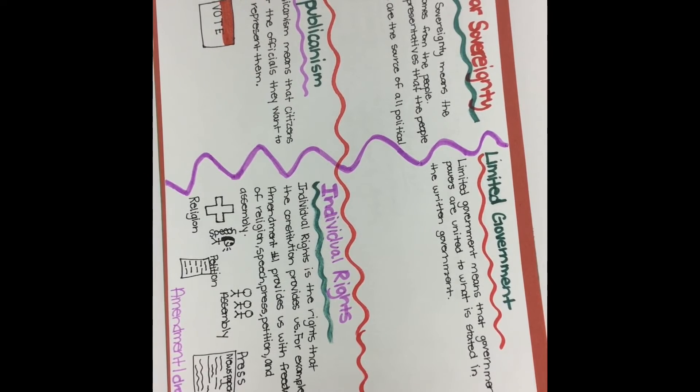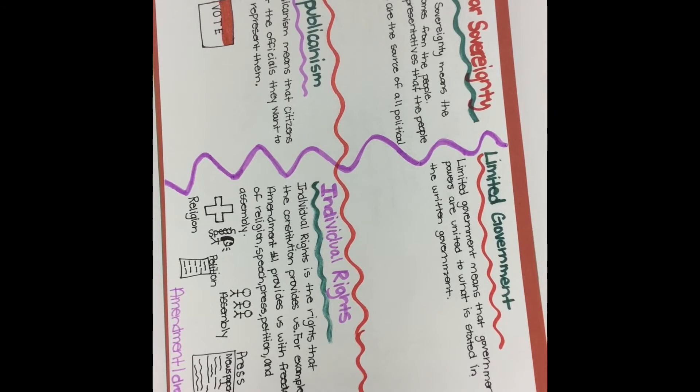Individual rights are the rights that the Constitution provides for us. For example, the amendments provide us with freedom of religion, speech, press, petition, and assembly.